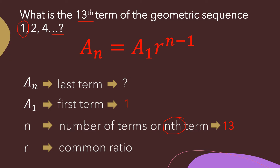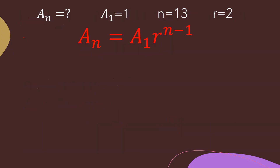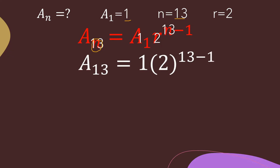To find the common ratio, we use the second term 2 divided by the first term 1, giving us r equals 2. Now substituting into the formula: a sub 13 equals 1 times 2 raised to 13 minus 1. Rewriting, we have a sub 13 equals 1 times 2 raised to 13 minus 1.